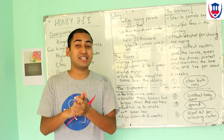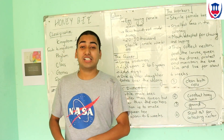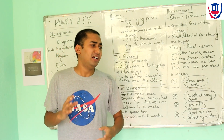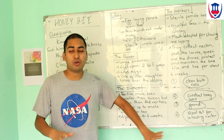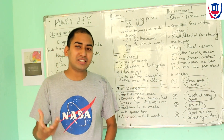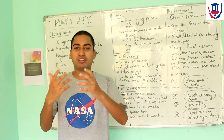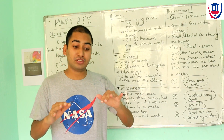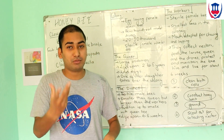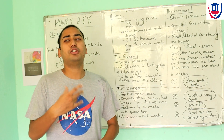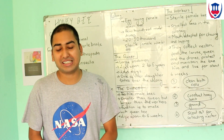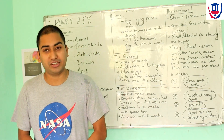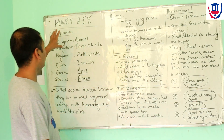Albert Einstein said that if bees were to become extinct, the world would also go extinct not long after. This is because honeybees play a major role in pollination. Pollination benefits a lot of flowers, plants, and the output from farmers. This is the logic behind Einstein's famous statement about honeybees.